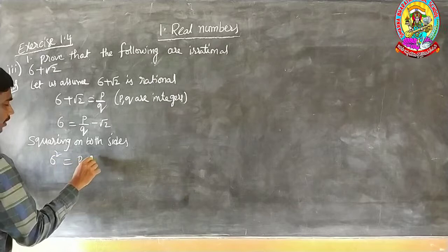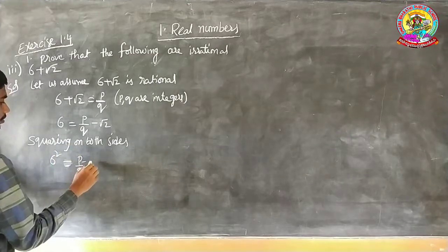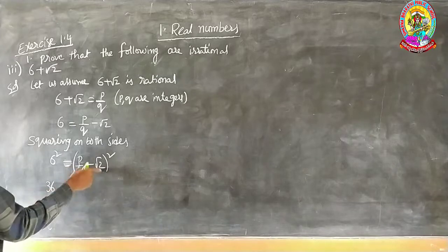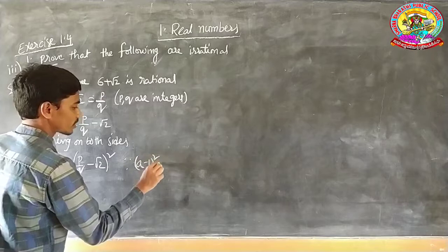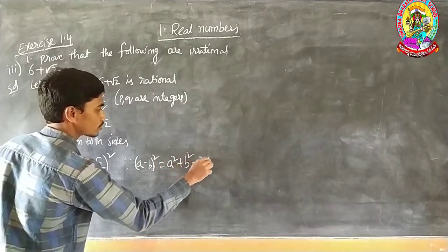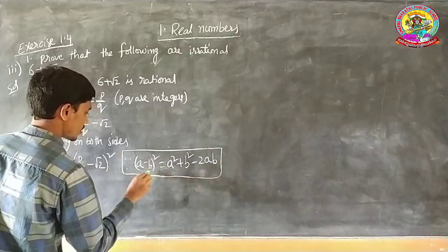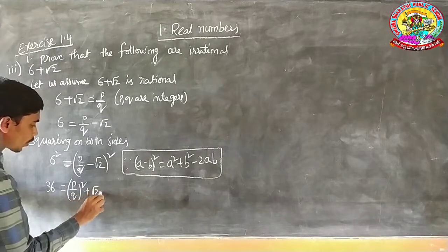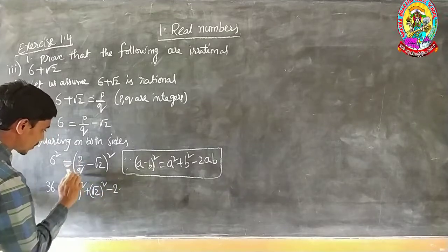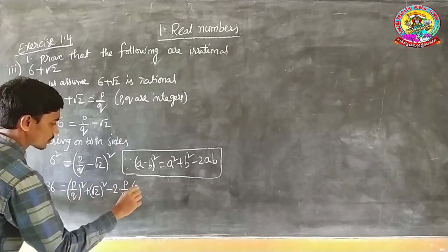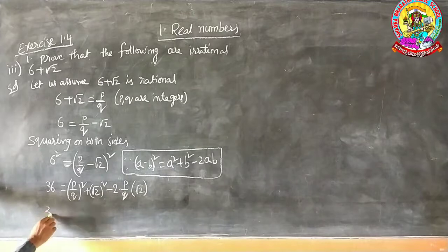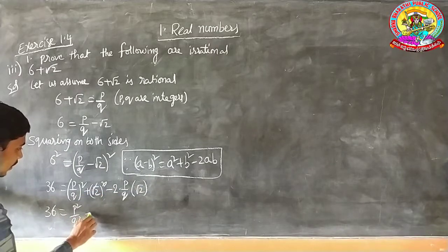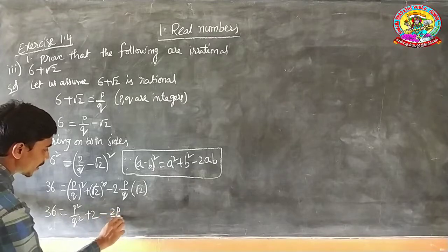36 equals (P by Q minus root 2) whole squared. This is in the form of (A minus B) whole squared, which equals A squared plus B squared minus 2AB. Applying this formula: 36 equals P squared by Q squared plus 2 minus 2 times (P by Q) times root 2.